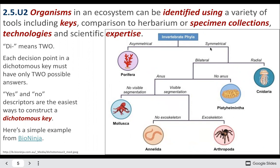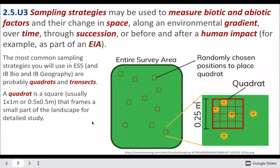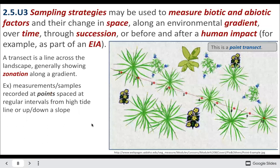You can also collect specimens, use technologies, use identification guides, and so on. Here's another example of a dichotomous key. We want to measure biotic and abiotic factors and how they change through space and time, and how humans might impact them. One method is to do a transect — making a line through the ecosystem and marking down each organism found at any given point.